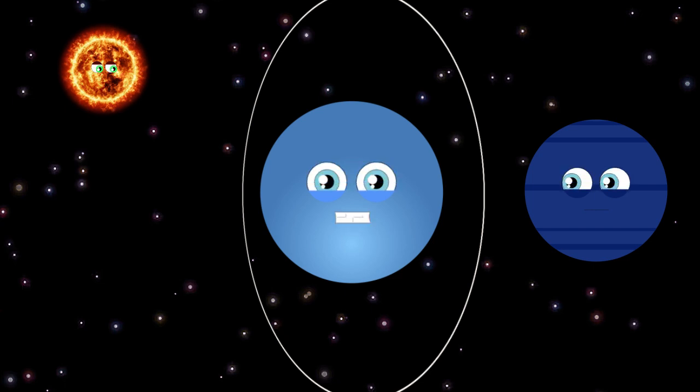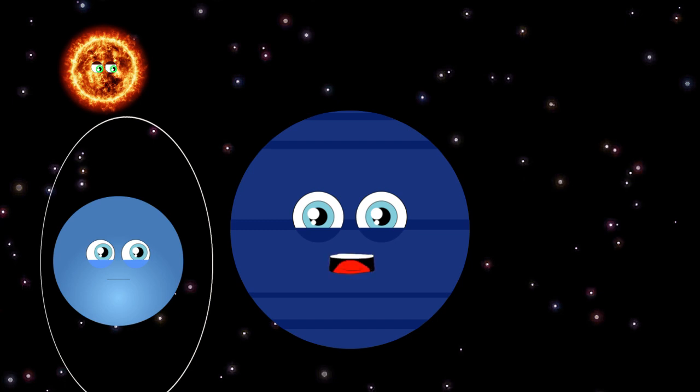My name is Neptune, no one can mispronounce my name. I'm blue as well. I'm intertwined with Pluto with my orbit and I'm like Uranus too.